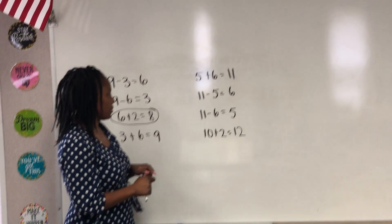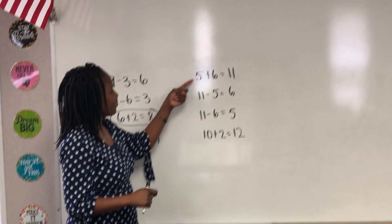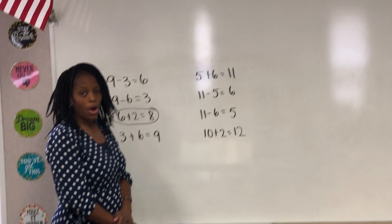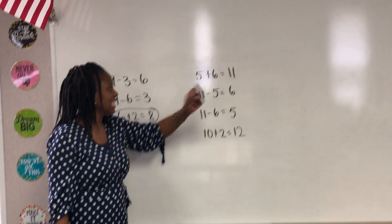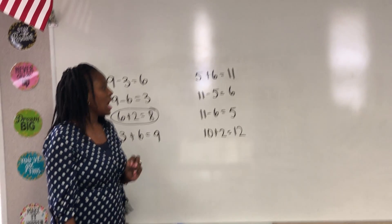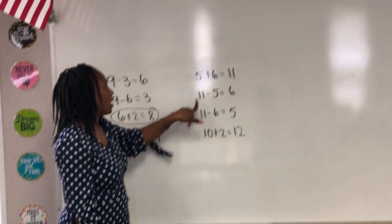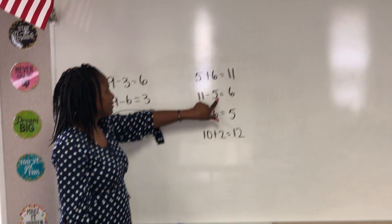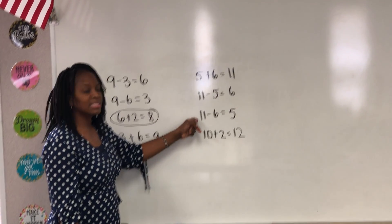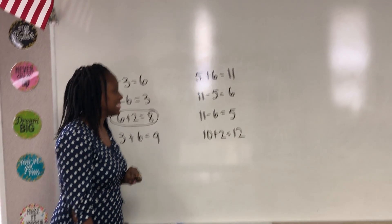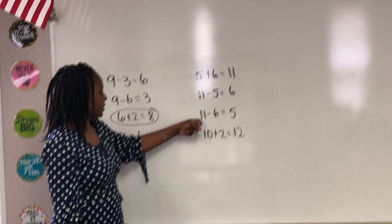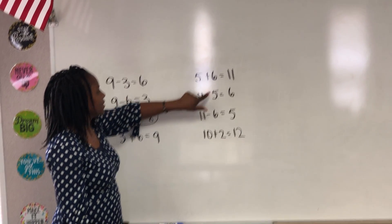Alright, let's take a look at the next one. You have 5 plus 6 equals 11. So far we have the digits 5, 6, and 11. Now let's take a look at our subtraction fact: 11 minus 5 equals 6. That 11 matches up, this 5 matches up, and this 6 matches up. Now let's take a look at the third one: 11 minus 6 equals 5. There we go again — we have 11 here, 11 here, and 11 here.